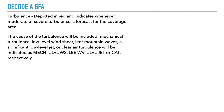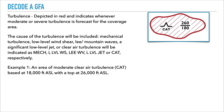Turbulence is depicted in red and indicates whenever moderate or severe turbulence is forecast for the coverage area. The cause of turbulence will be included whenever you have mechanical turbulence, low level wind shear, lee mountain waves, a significant low level jet, or clear air turbulence. In this example, turbulence is depicted as a red line indicating an area of moderate clear air turbulence based at 18,000 feet ASL with the top at 26,000 feet ASL.